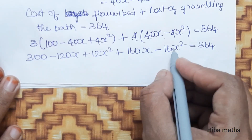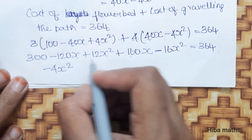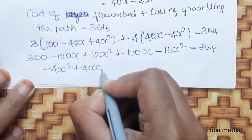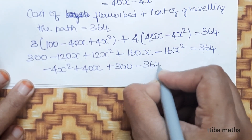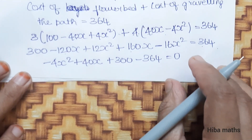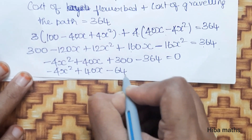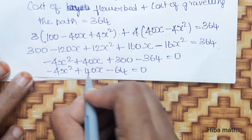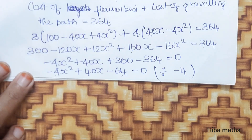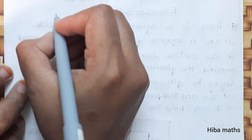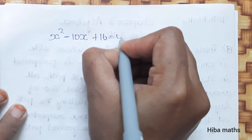Simplifying: minus 16x squared plus 12x squared gives minus 4x squared; plus 160x minus 120x gives plus 40x; so 300 minus 4x squared plus 40x minus 364 equals 0. Rearranging: minus 4x squared plus 40x minus 64 equals 0, and dividing by minus 4 gives x squared minus 10x plus 16 equals 0.